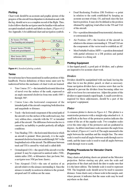A common plotter is shown in Figure 4-2. This plotter is a semicircular protractor with a straight edge attached to it. A small hole at the base of the protractor portion indicates the center of the arc of the angular scale. Two complete scales cover the outer edge of the protractor and are graduated in degrees. An abbreviated inner scale measures the angle from the vertical.